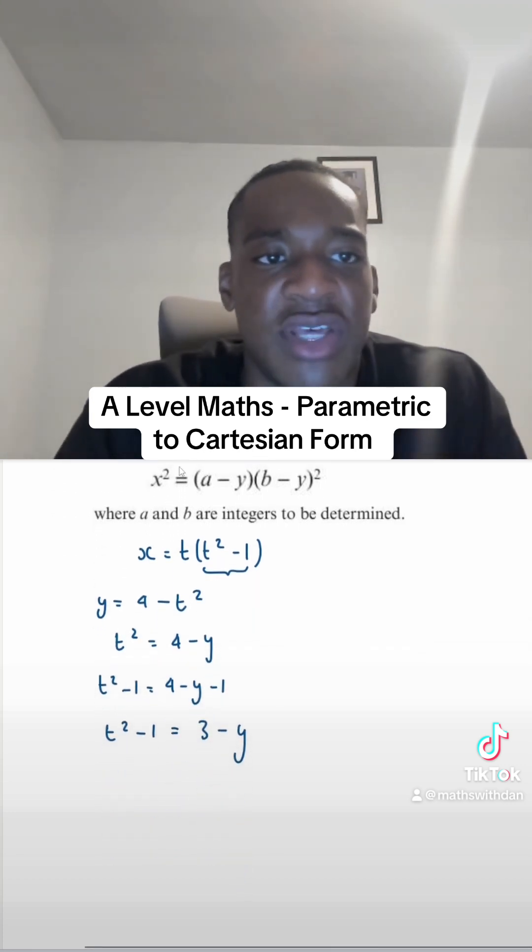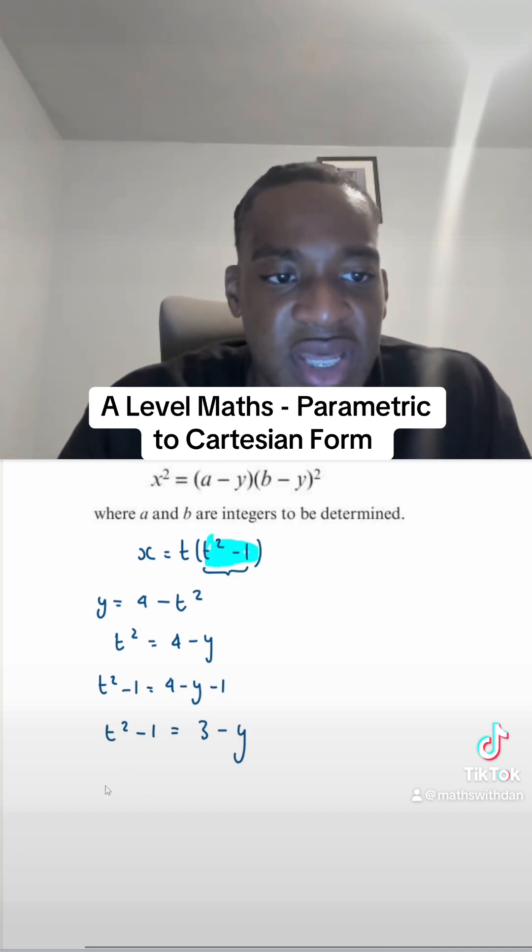This is really good because I've got this expression here, t squared minus 1. So I'm going to say that x equals t times, instead of writing t squared minus 1, I'm going to write (3 minus y).